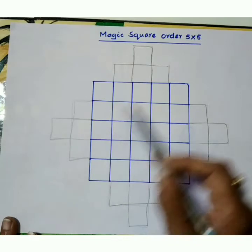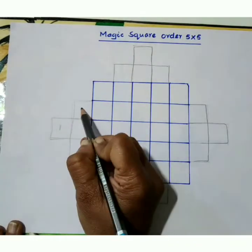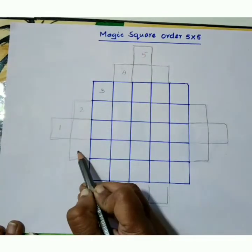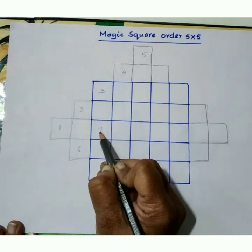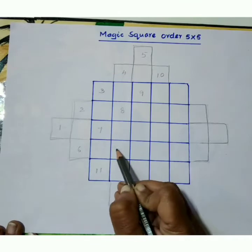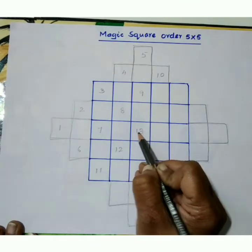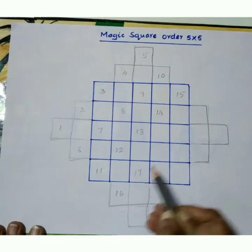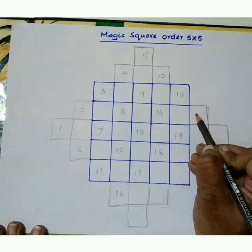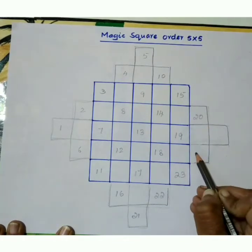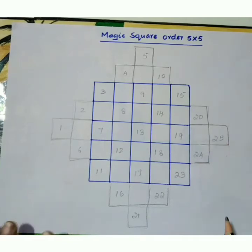Let us start: 1, 2, 3, 4, 5. Second diagonal box: 6, 7, 8, 9, 10, 11, 12, 13, 14, 15, 16, 17, 18, 19, 20, 21, 22, 23, 24, 25. Now diagonal wise all the diagonals are filled.